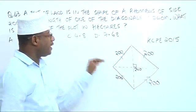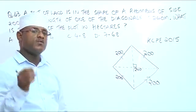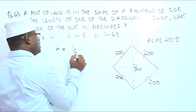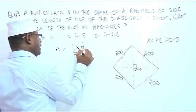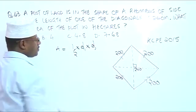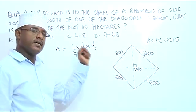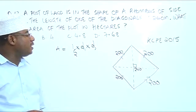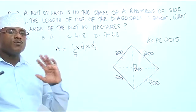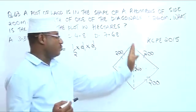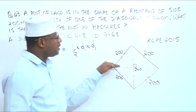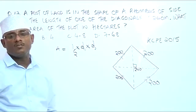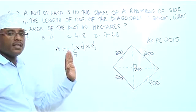Now we have one diagonal and another diagonal. The area of a rhombus is given by one half times one diagonal multiplied by the other diagonal — a half times D1 times D2. But in our question, we are only given the length of one of the diagonals. So what we need to do is find the length of the other diagonal, and then we can calculate the area.